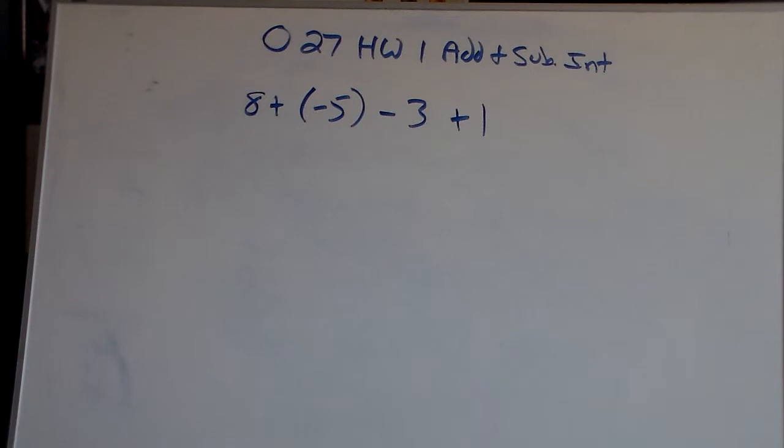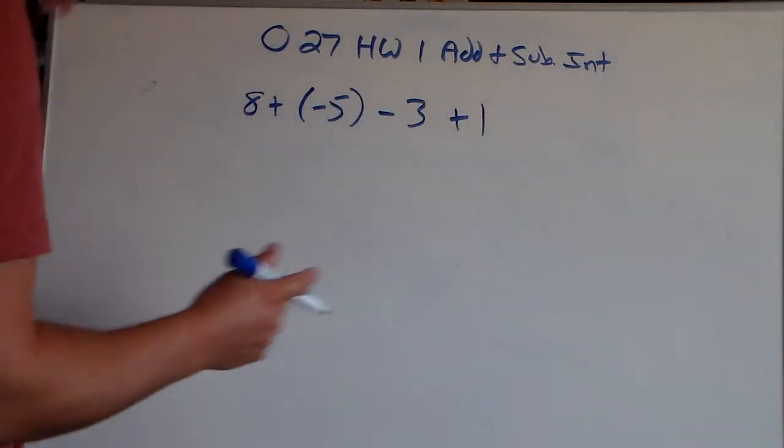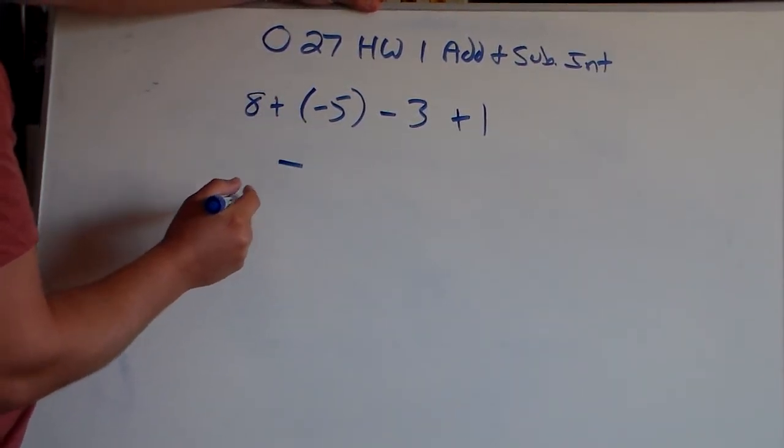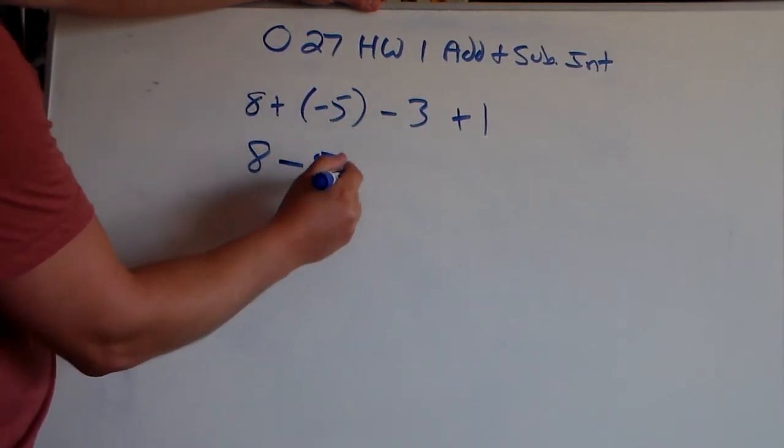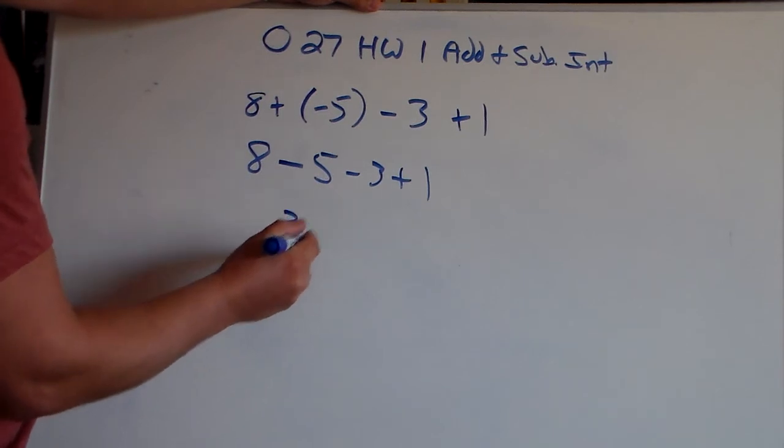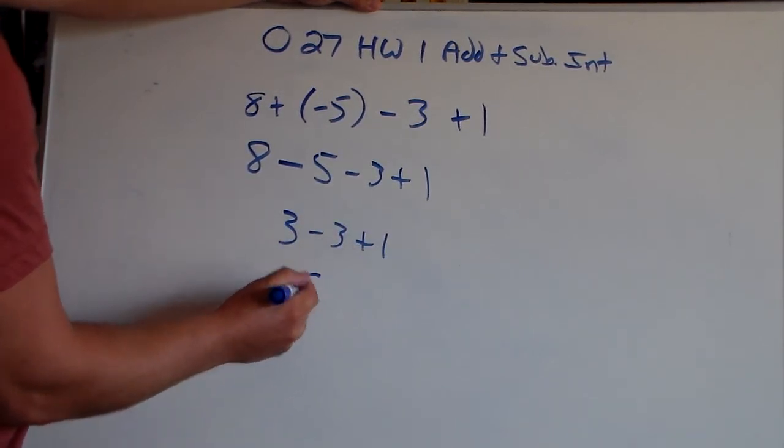All right, here we go with the last problem that we're going to do together before you do a couple on your own. There's problem number 5 here on the homework. So, we look at 8 plus negative 5 minus negative 3. I'm sorry, minus 3 plus 1. So, our back to back signs is the plus and the negative. So, that's really just a negative. So, 8 minus 5 minus 3 plus 1. So, 8 minus 5 gets you 3. Carry down to minus 3, then the plus 1. 3 minus 3 is 0.